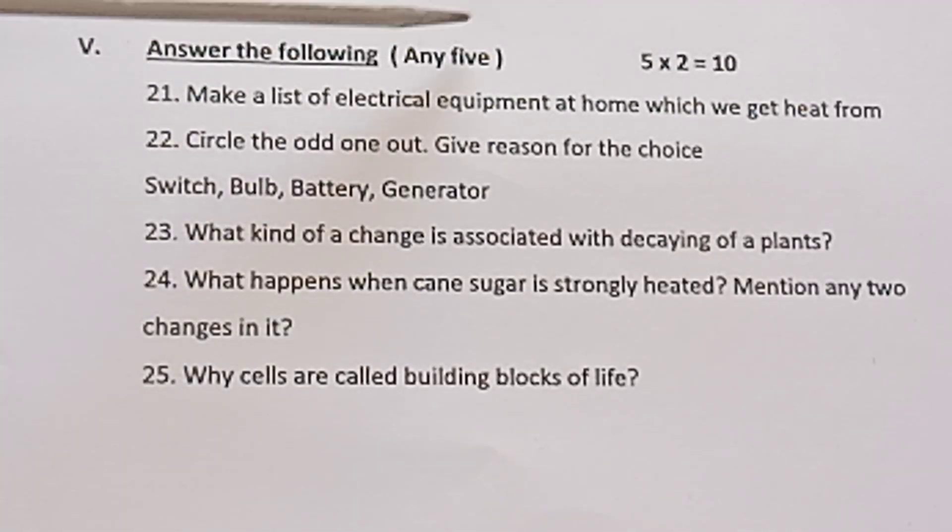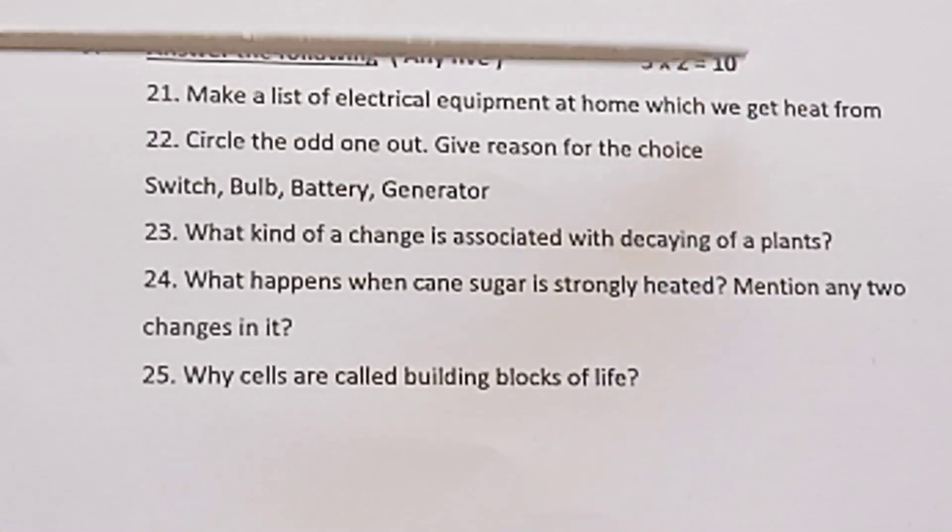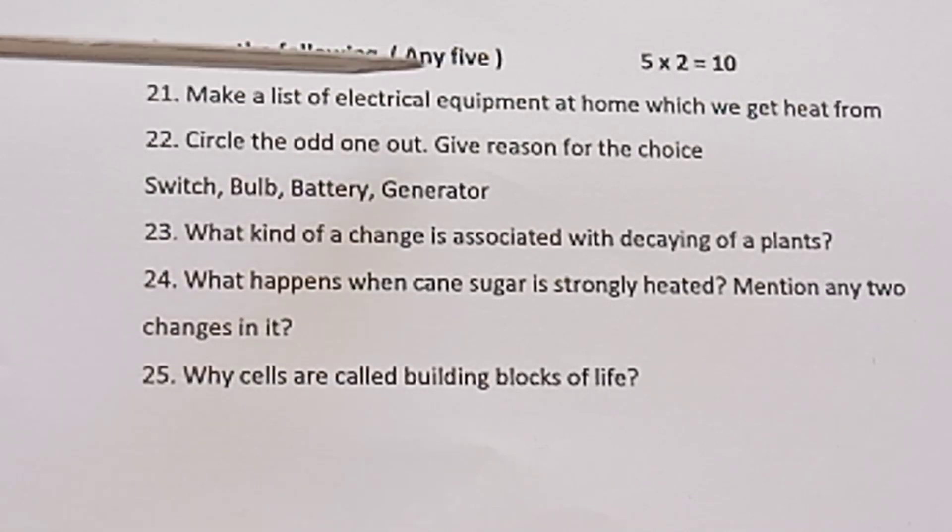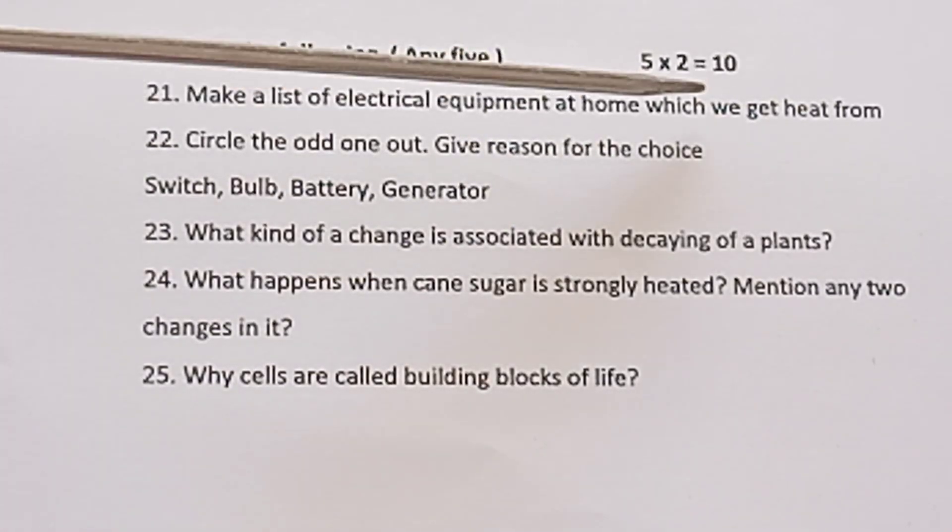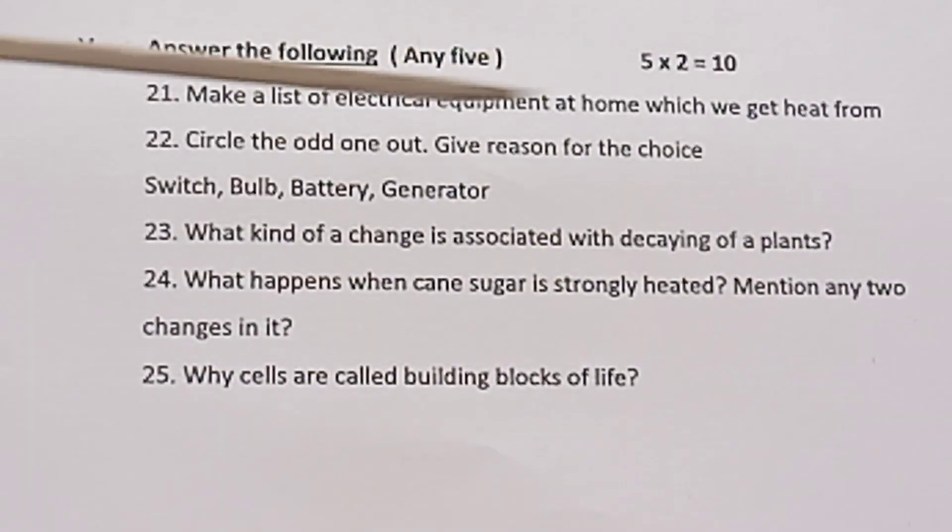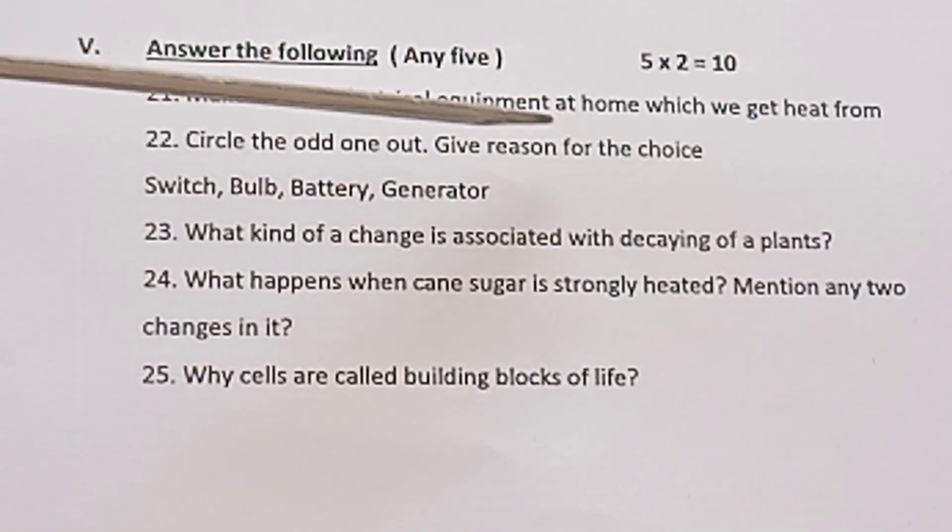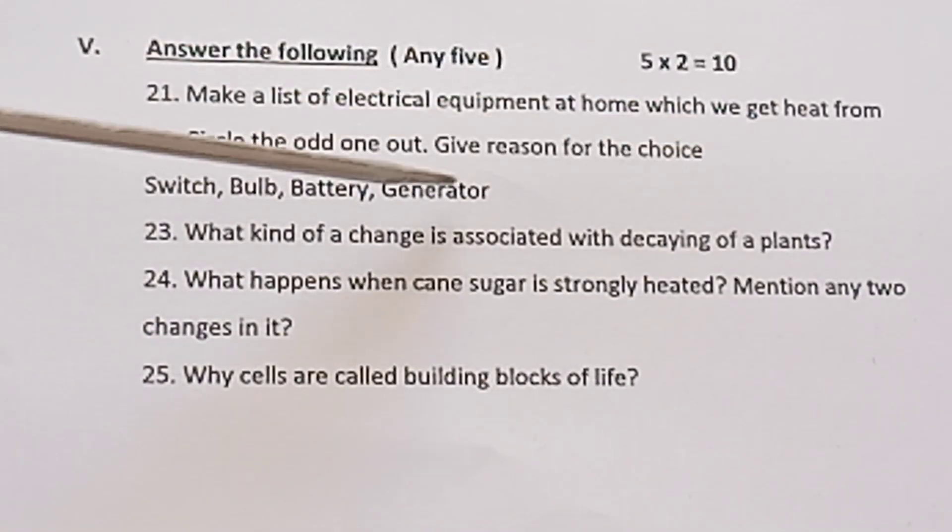Section V: Answer the following. Any five. 5 × 2 = 10. Question 21: Make a list of electrical equipment at home which we get heat from. Question 22: Circle the odd one out. Give reason for the choice. Switch, Bulb, Battery, Generator.